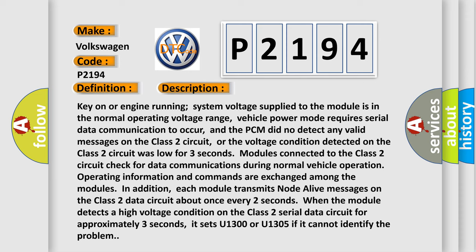In addition, each module transmits node alive messages on the class 2 data circuit about once every 2 seconds. When the module detects a high voltage condition on the class 2 serial data circuit for approximately 3 seconds, it sets U1300 or U1305 if it cannot identify the problem.